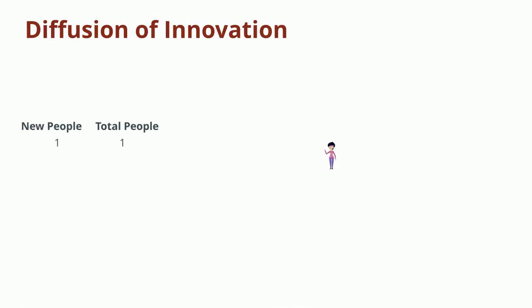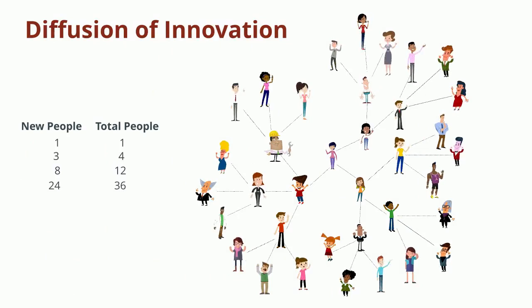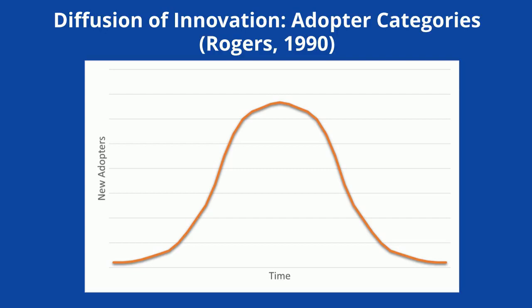Now let's talk about patterns in the diffusion of innovation. Suppose one person convinces her friends to adopt an innovation, and they convince their friends to adopt an innovation, and they convince their friends to adopt an innovation. In a social referral process like this, the number of adopters will increase exponentially until most of the market has been reached. After the bulk of the market has been tapped, the number of new adopters starts to decline, so you get this curve with a hump in the middle.